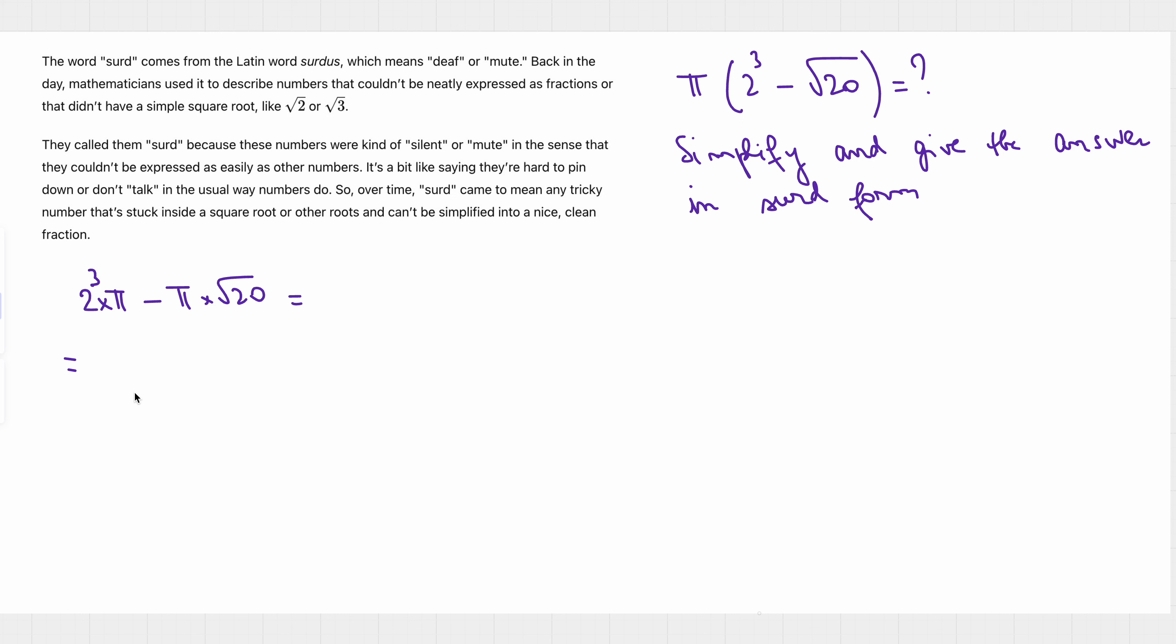What can we do next? So, instead of writing 2 to the power 3, we can compute it. So, we have 8 times pi minus, and here 20 can be written as 2 to the power 2 times 5.